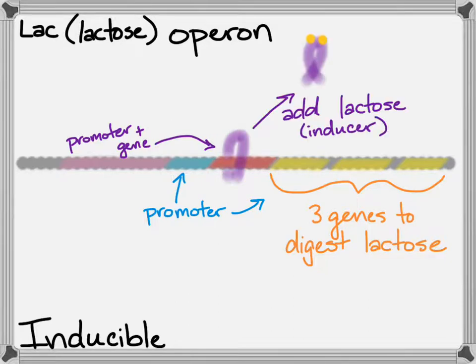If lactose is present around the cell and the cell suddenly has lots of lactose that it could digest, lactose binds to that repressor and removes the repressor molecule because it does not bind in that state. Now the genes to digest lactose can be produced, and the cell itself can digest lactose, making this an inducible operon.